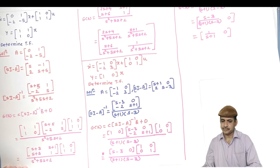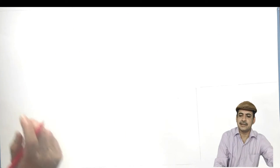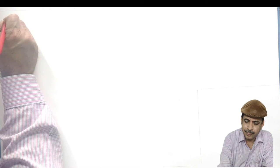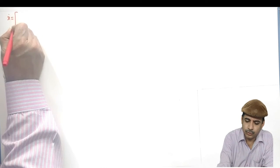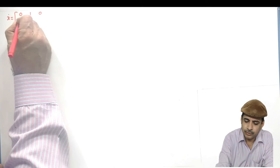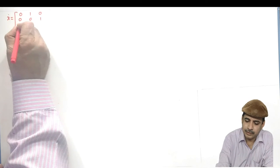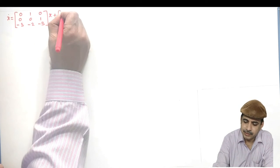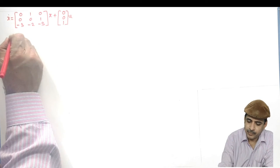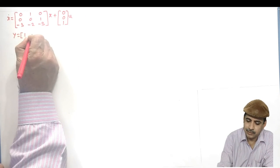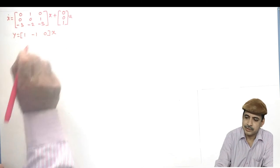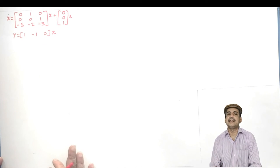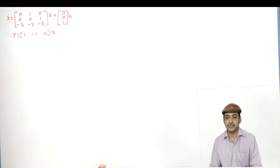We will now extend to a 3×3 or third-order system. Take the example: x-dot = [[0,1,0],[0,0,1],[−3,−2,−5]]·x + [[0],[0],[1]]·u, and y = [1, −1, 0]·x. This is in controllable canonical form, and from this form you can get the transfer function directly without calculation — only in controllable or observable canonical form. We will get the answer and then discuss how it was possible.